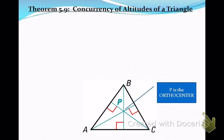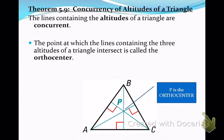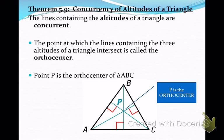If you were to draw in all the altitudes of a triangle, they would all intersect at one point — they would be concurrent as well. That point of concurrency is called the orthocenter. In triangle ABC, P is the orthocenter. The segments AD, BF, and CE are all altitudes because they go from a vertex and are perpendicular to the opposite side.